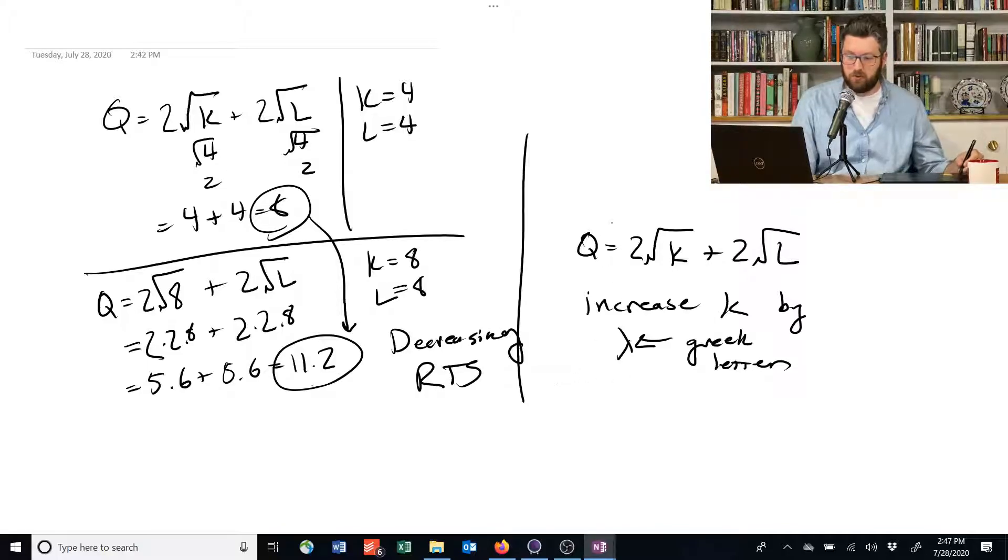From Q equals 2 square root of K plus 2 square root of L to Q prime is equal to 2 square root of lambda times K. So we've increased it by a factor plus 2 times lambda times the square root of L.